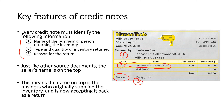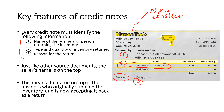Just like other source documents, the name of the seller is always on top of the document. In this case, Markon Tools is the seller — they sold the inventory to Hardware Plus. Markon Tools is now accepting the inventory back as a return. It's really important to know which business you are. In this instance, we are Hardware Plus, doing a purchase return of inventory to Markon Tools.